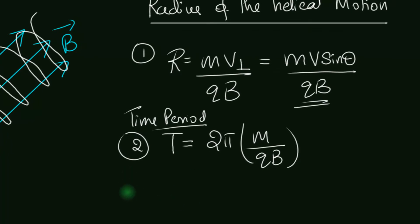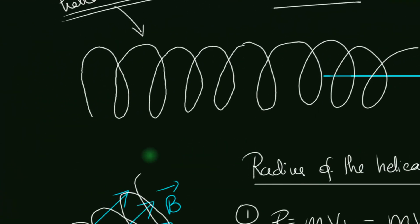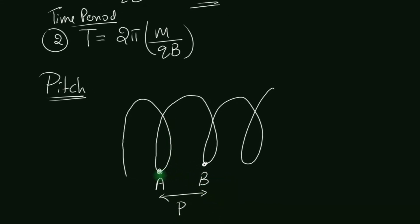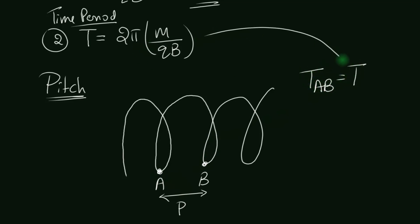Now we introduce a new quantity — the pitch. The pitch is the distance traveled along the direction of the magnetic field during one complete circle. So point A is where the charged particle starts, and the pitch is the distance from A to B. To calculate it, we note that the time to go from A to B is exactly one time period T, since the circular motion completes one full revolution.